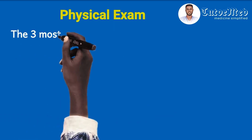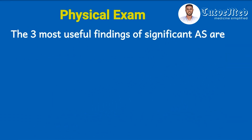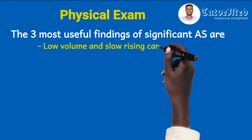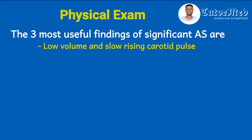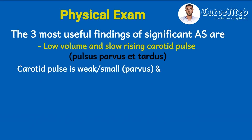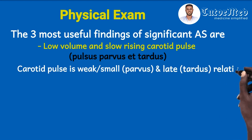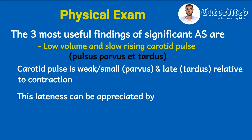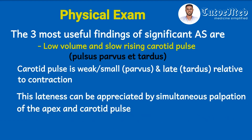Now let's look at the physical exam findings that make us suspect aortic stenosis. The three most useful findings are: first, a carotid pulse with reduced volume and slow rising, known as pulsus parvus et tardus. Because of the stenosis, the carotid pulse volume will be weak (parvus) and late (tardus) relative to ventricular contraction. This lateness can be appreciated by simultaneously palpating the apex and the carotid pulse — the apex impulse comes earlier than what you feel in the carotid artery.